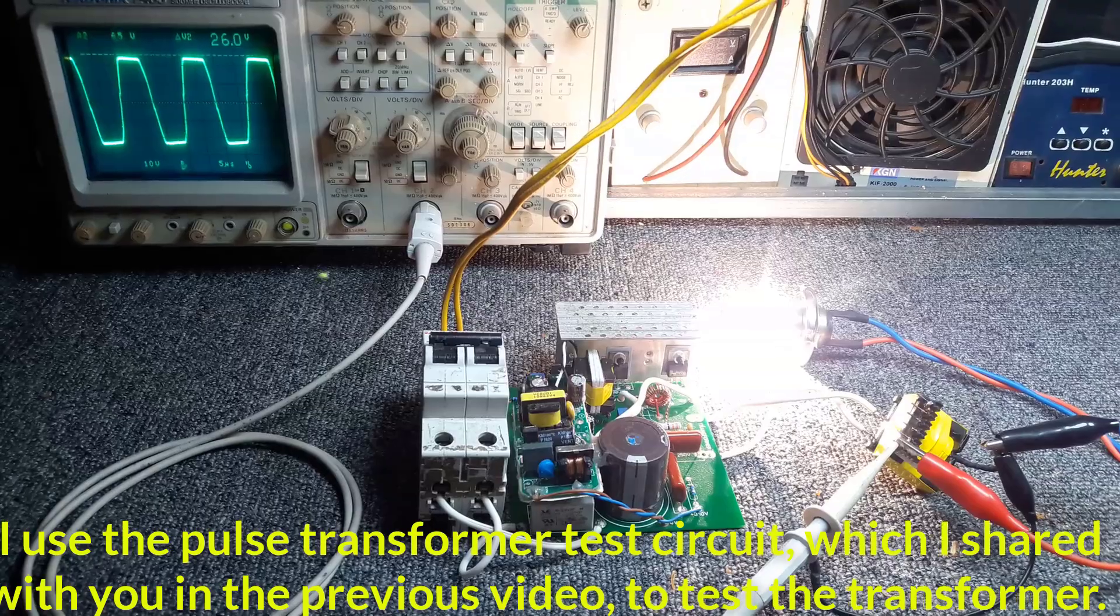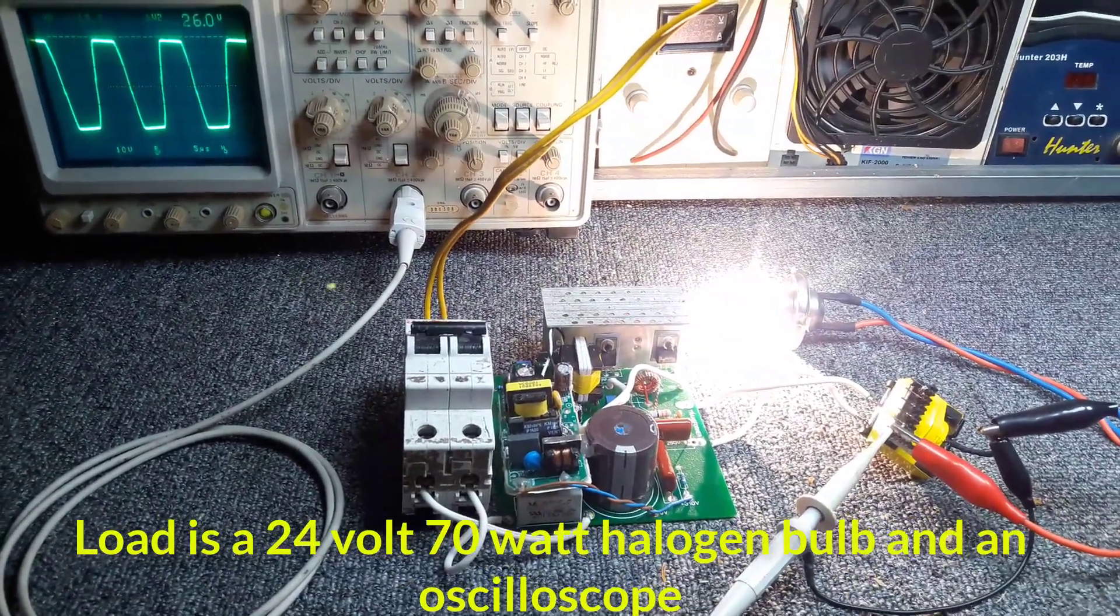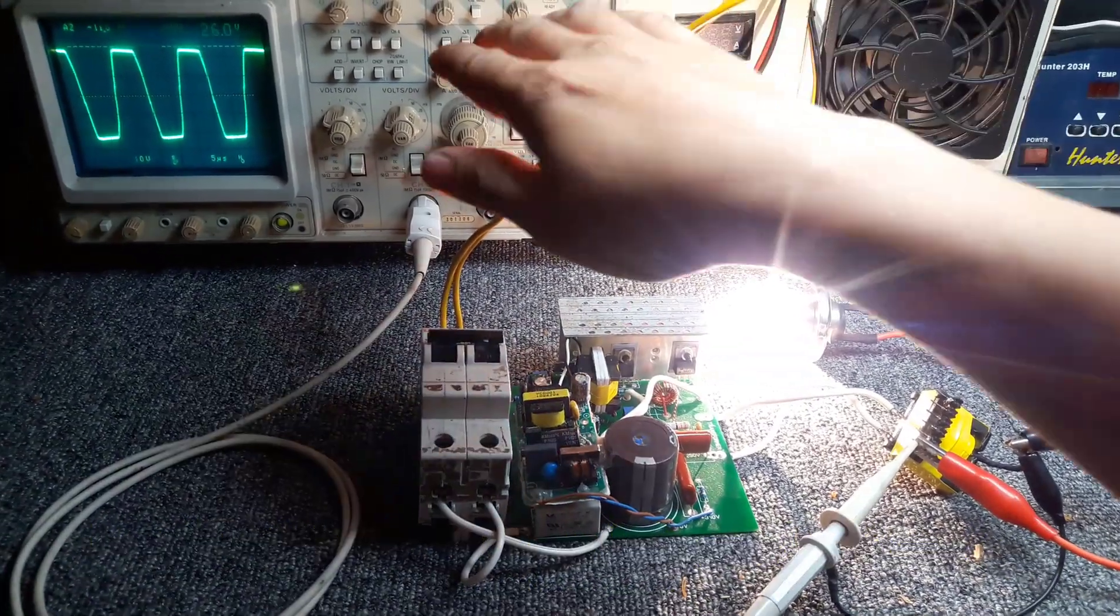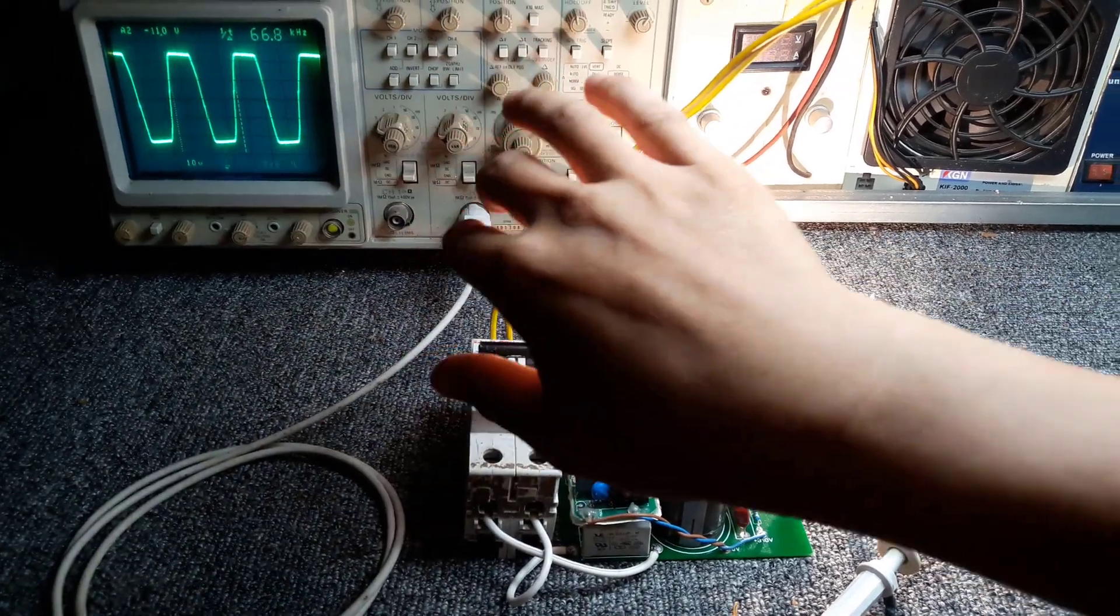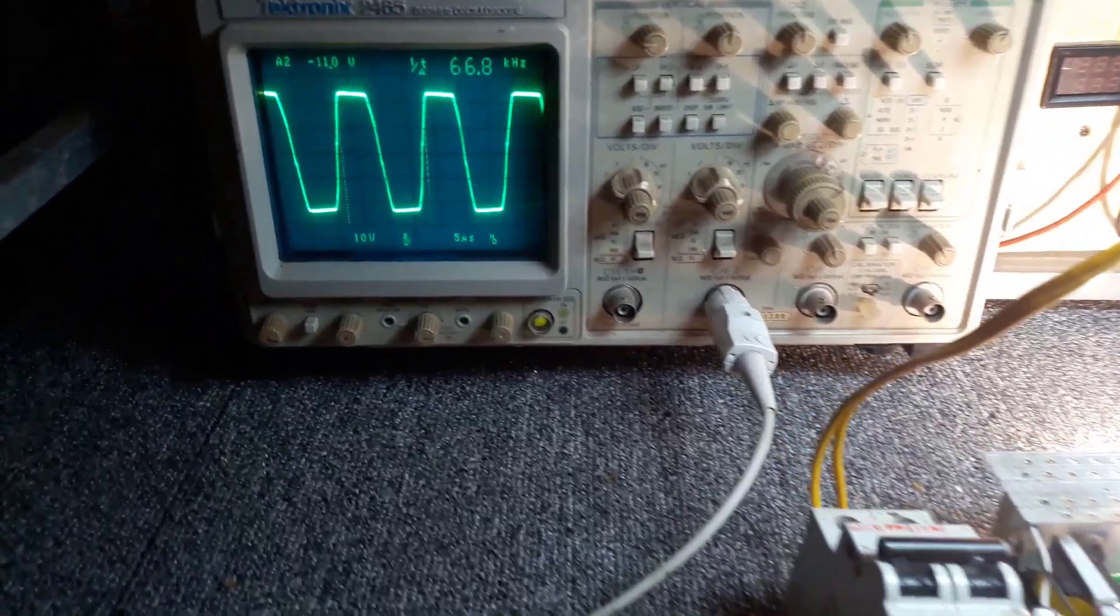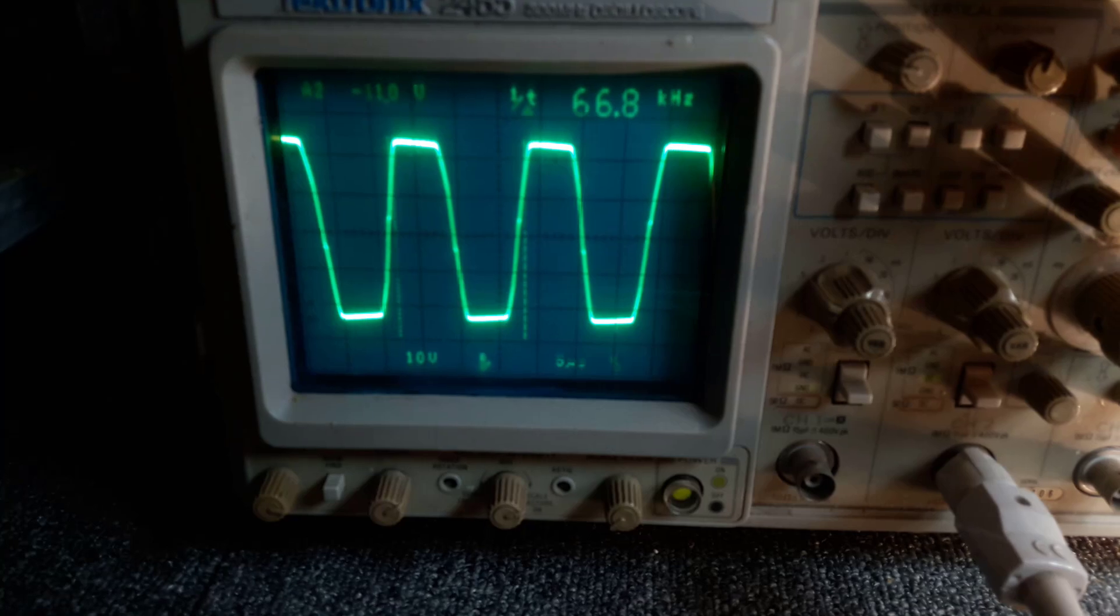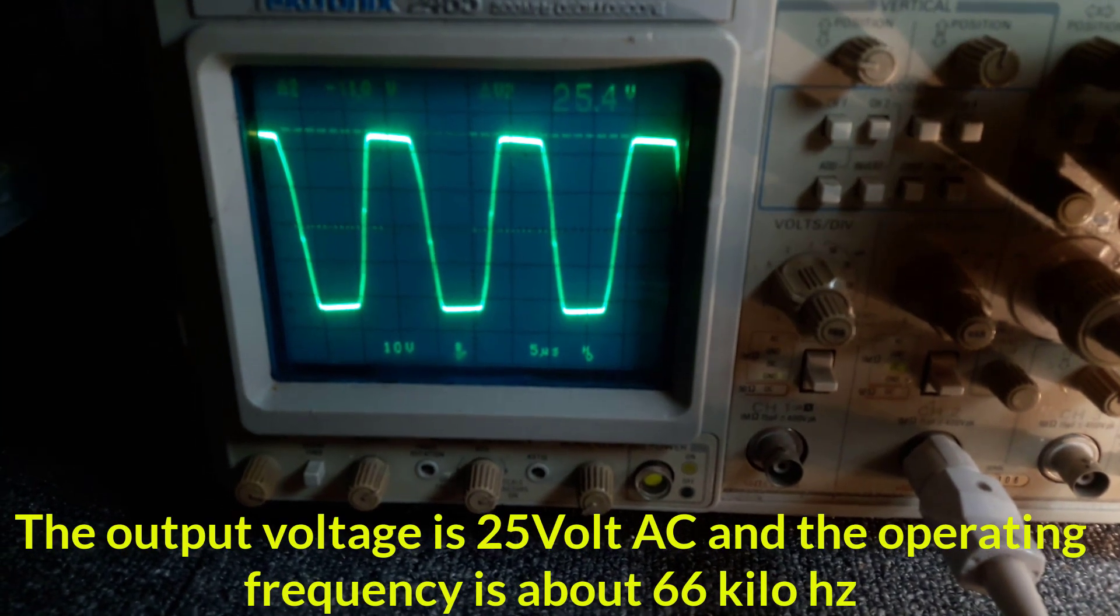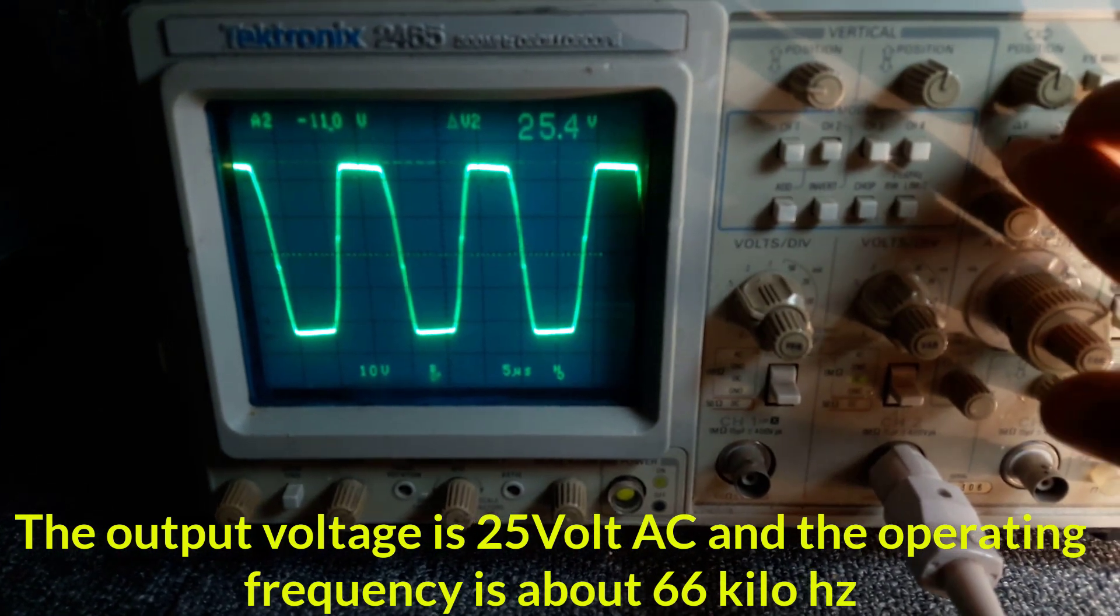I use a test circuit which I shared with you in the previous video to test the transformer. Load is a 24 volt 70 watt halogen bulb and an oscilloscope. The output voltage is 25 volt AC and the operating frequency is about 66 kilohertz.